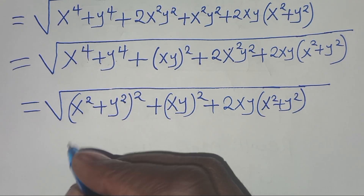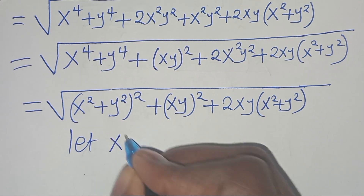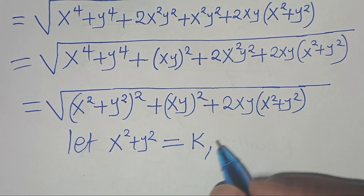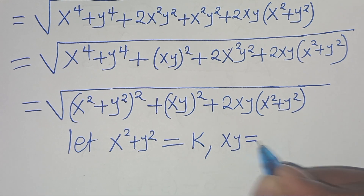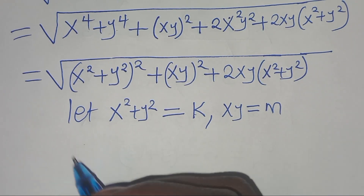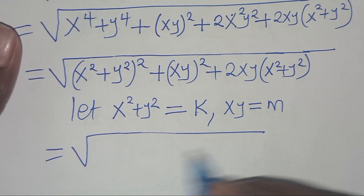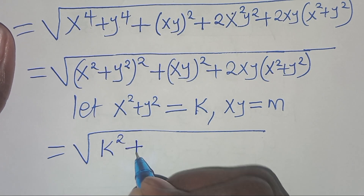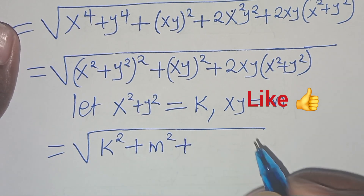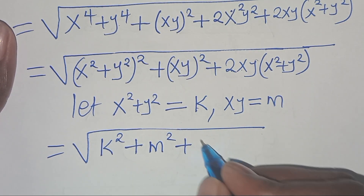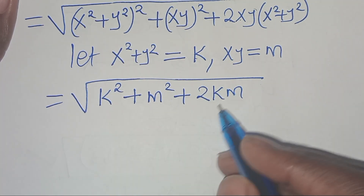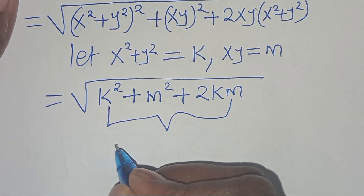The next step: let x squared plus y squared be expressed as k, and let xy be expressed as m. Substituting, this implies that we have the square root of k squared plus m squared, then plus 2km.